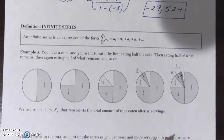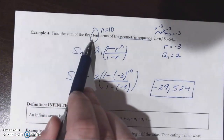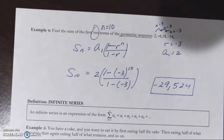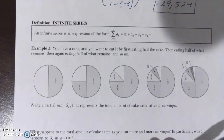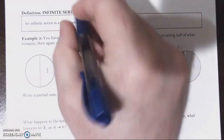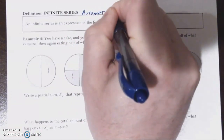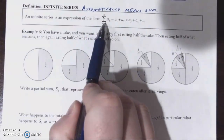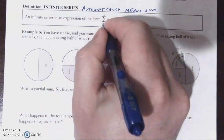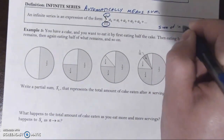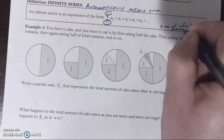The next part of our notes deals with an infinite series — what if the question asked for the sum of all the terms of the geometric sequence, an infinite amount of terms? An infinite series is an expression representing the sum of an infinite amount of terms. Using sigma notation, an infinite series is defined as the sum from the first term through all infinite terms.